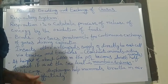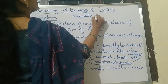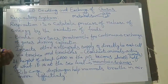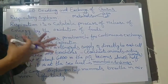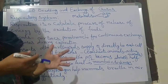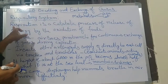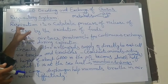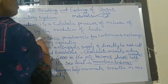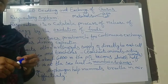Metabolism includes anabolism and catabolism. Catabolism means we are getting energy to do work. This whole anabolism and catabolism together is called metabolism. Respiration is the catabolic process of release of energy — by the process of respiration, by the oxidation of food, we get energy to do work.